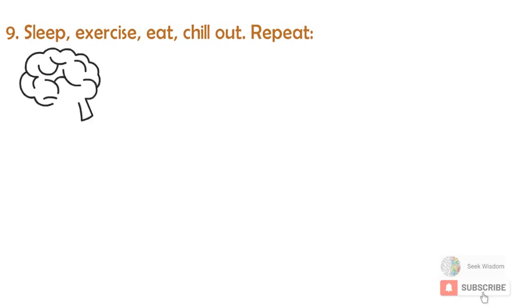Nine: Sleep, exercise, eat, chill out, repeat. Being human means accepting the limitations. A healthy mind lives in a healthy body. We need to eat, not too much, not too often, and the right stuff.